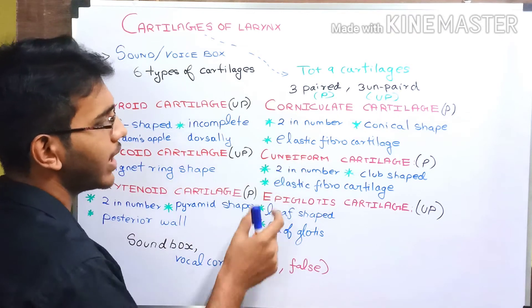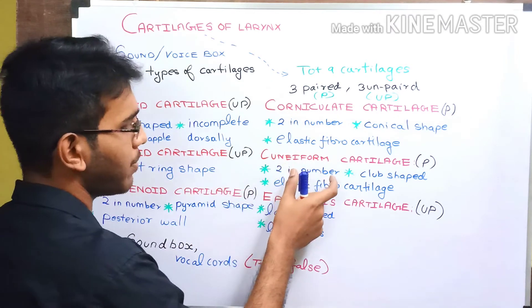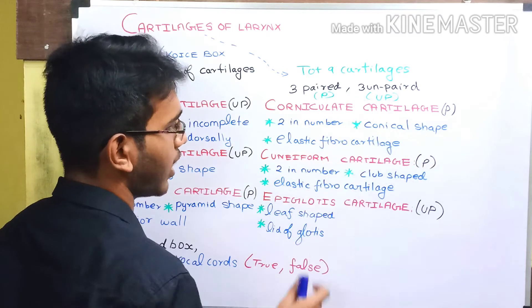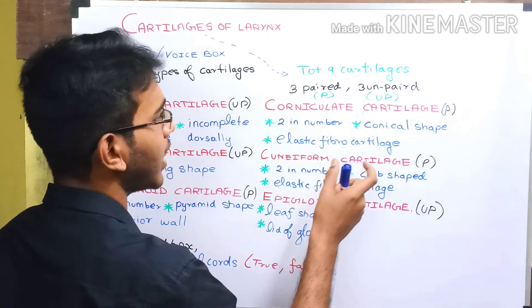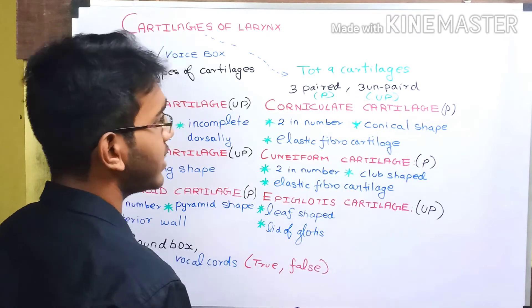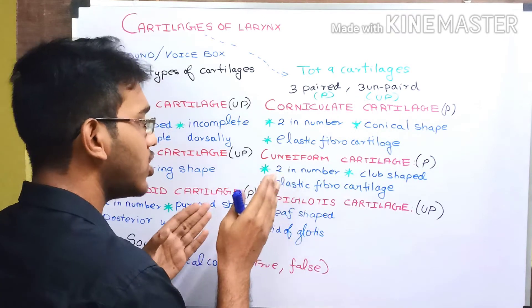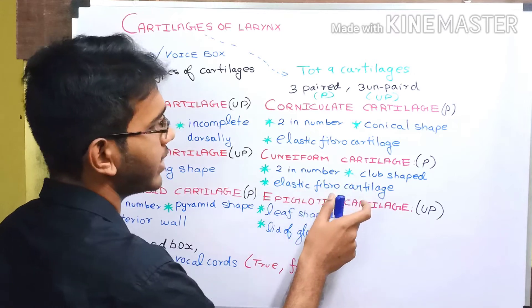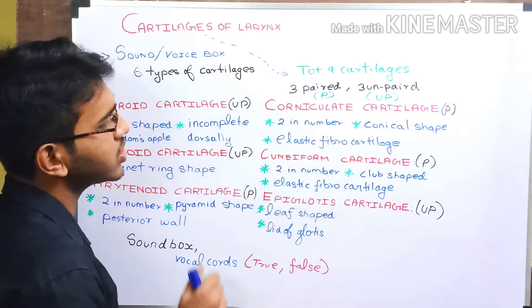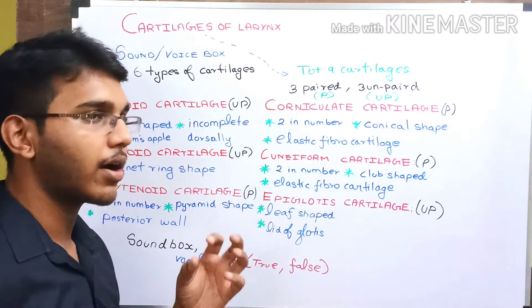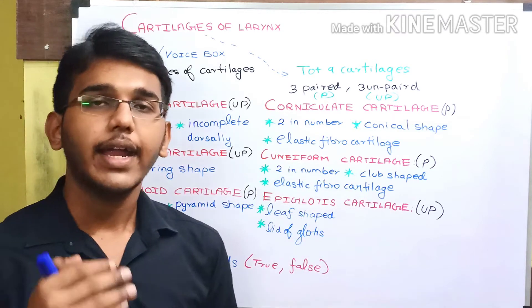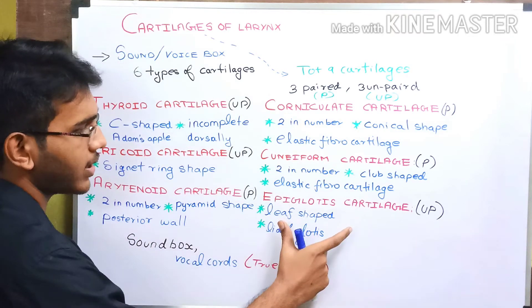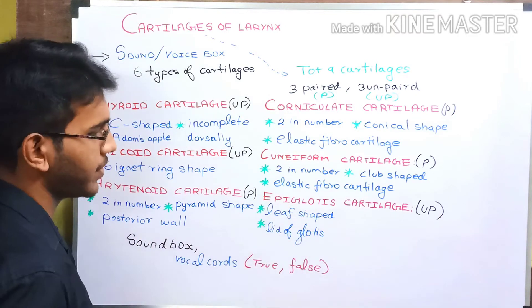Next, we have the cuneiform cartilage. It is two in number — also a paired cartilage. It is a club-shaped cartilage and is also an elastic fibrocartilage. The main function of the cuneiform cartilage is to connect the arytenoid cartilage and the epiglottis cartilage.